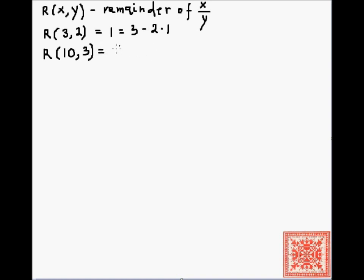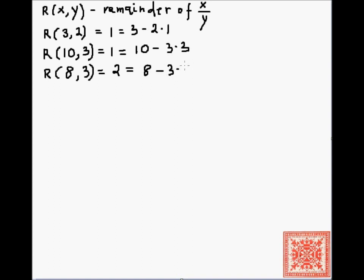That is equal to 10 minus 3 times 3. And the remainder of 8 and 3 is equal to 2, which is equal to 8 minus 3 times 2. In this equality, 1 is the value of the floor of 3 over 2.